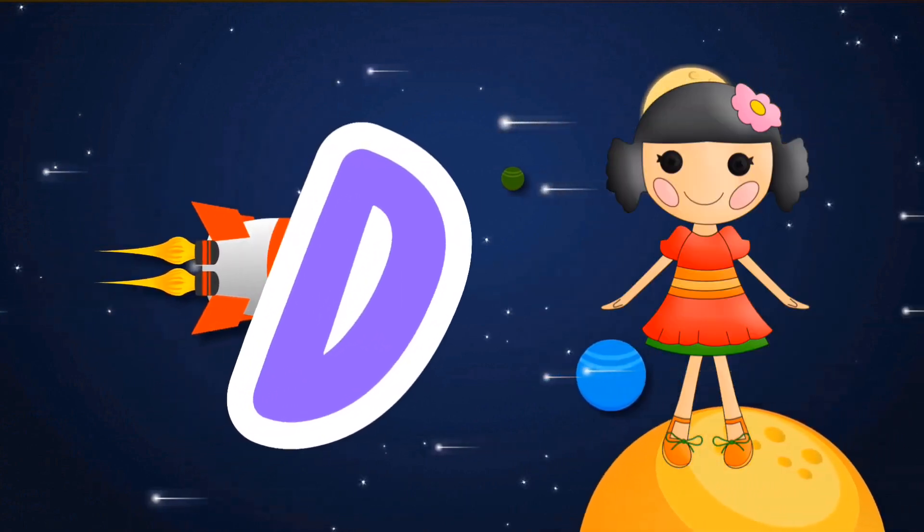A is for apple, a-a-apple. B is for ball, b-b-ball. C is for cat, c-c-cat. D is for doll, d-d-doll.